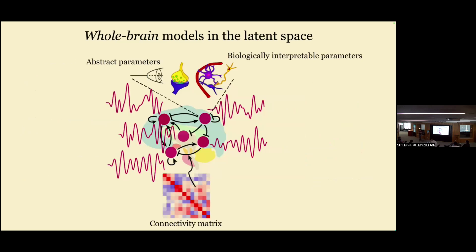What we do in Gustavo's group is whole-brain models: a network of nodes connected by a connectivity matrix — functional, effective, or structural depending on the question. In each node you place a small dynamical system. A very classical model that works well for capturing fMRI features is the Hopf model. You could also put more biologically inspired models in the nodes, depending on what mechanisms you're interested in. Now in the latent space, we have 15 nodes instead of 100.